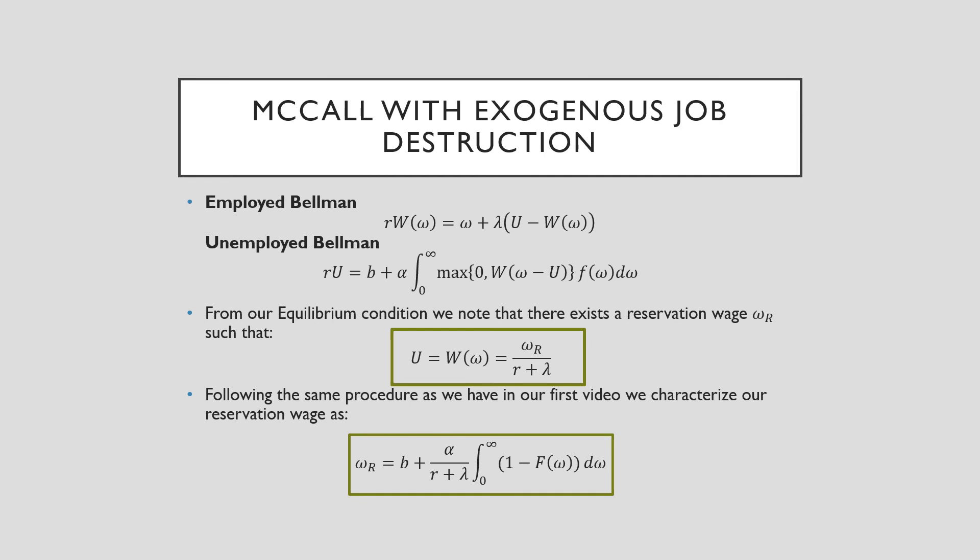From our equilibrium condition, we note that there exists a reservation wage omega_r. And that's the story with all of these equilibrium conditions, such that the value of being employed is equal to the value of being unemployed, which is equal to this reservation wage all over r, which is the subjective discount factor, plus lambda here. That is our job destruction rate.